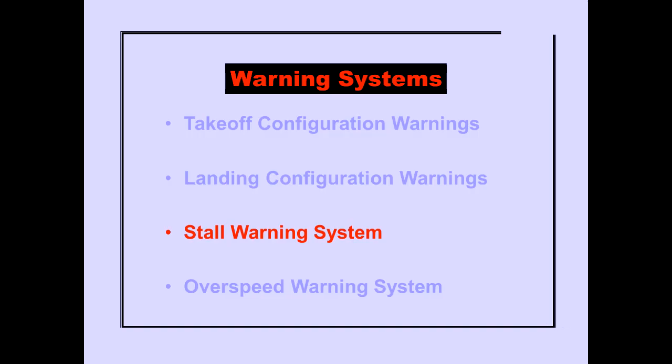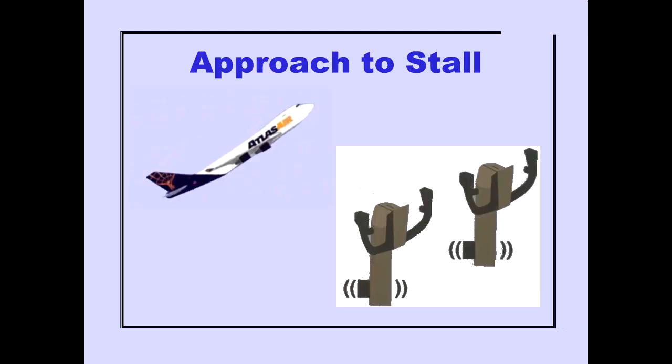Now let's look at the stall warning system. Stall warning is provided by two independent stall warning systems. When the angle of attack indicates an approach to a stall, stick shakers vibrate both control columns.